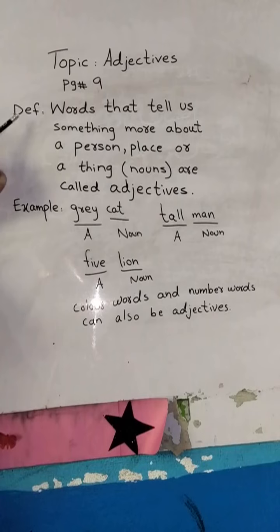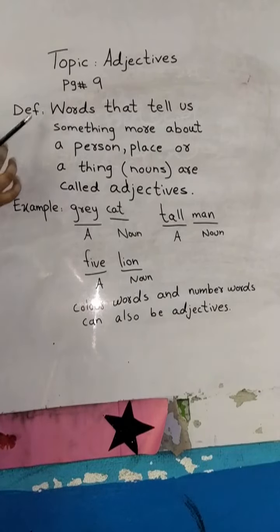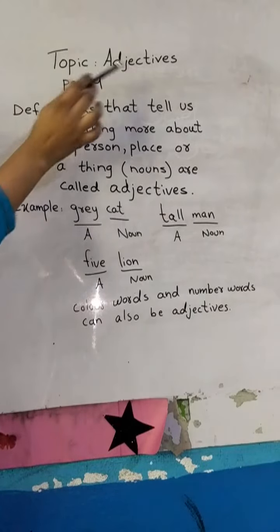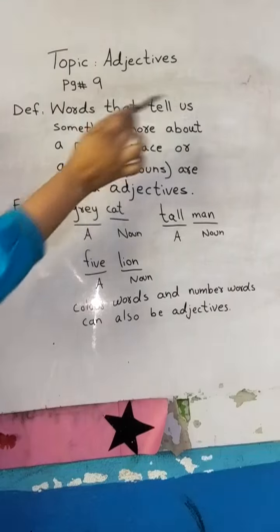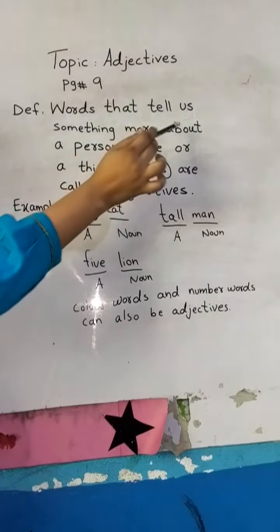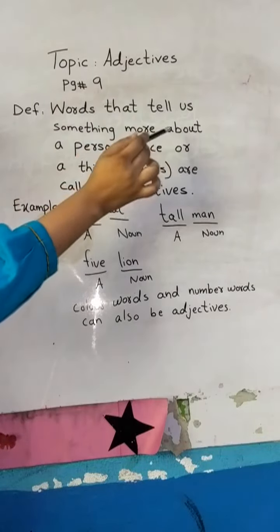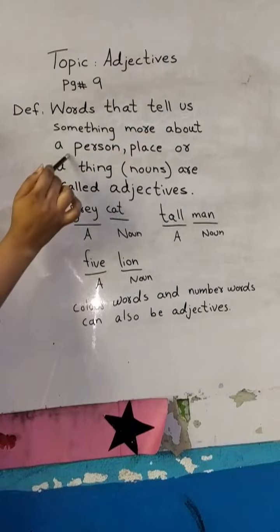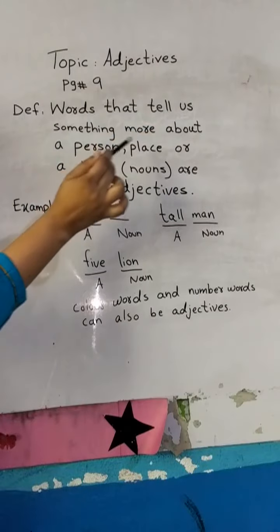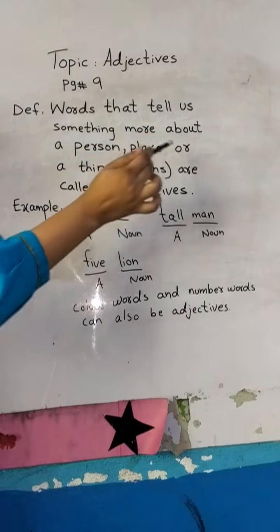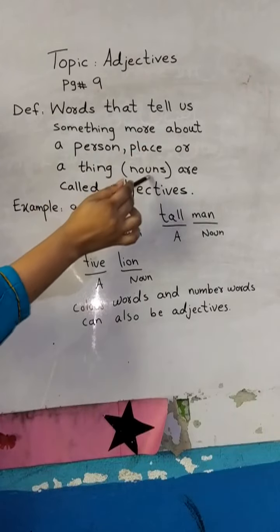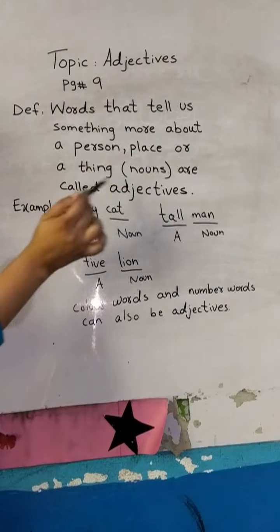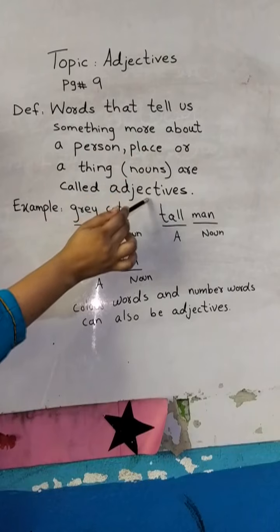Firstly, I am going to tell you the definition of Adjectives. Words that tell us something more about a person, place, or a thing — nouns — are adjectives.